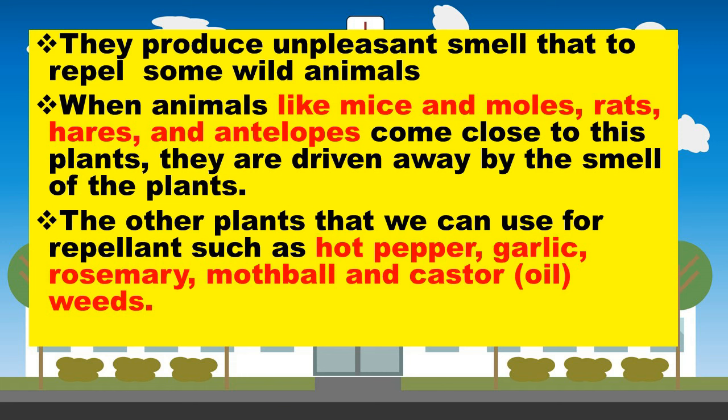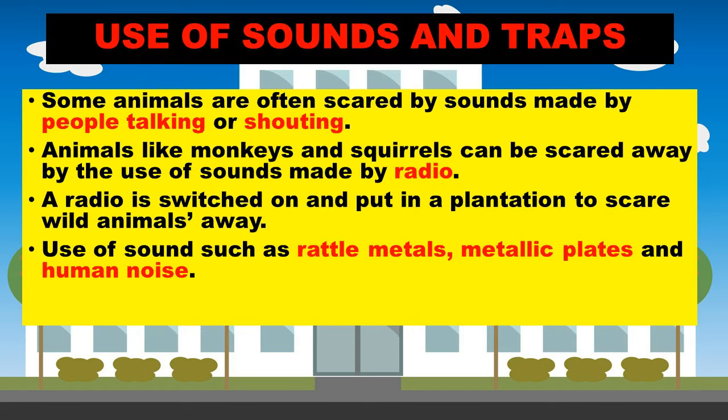Other plants that we can use as repellents include hot pepper, garlic, rosemary, mothball, and castor oil. We can use different ways of keeping them away. Animals like monkeys can be scared away by using sound made by a radio. A radio is switched on and put in the plantation to scare the wild animals away.